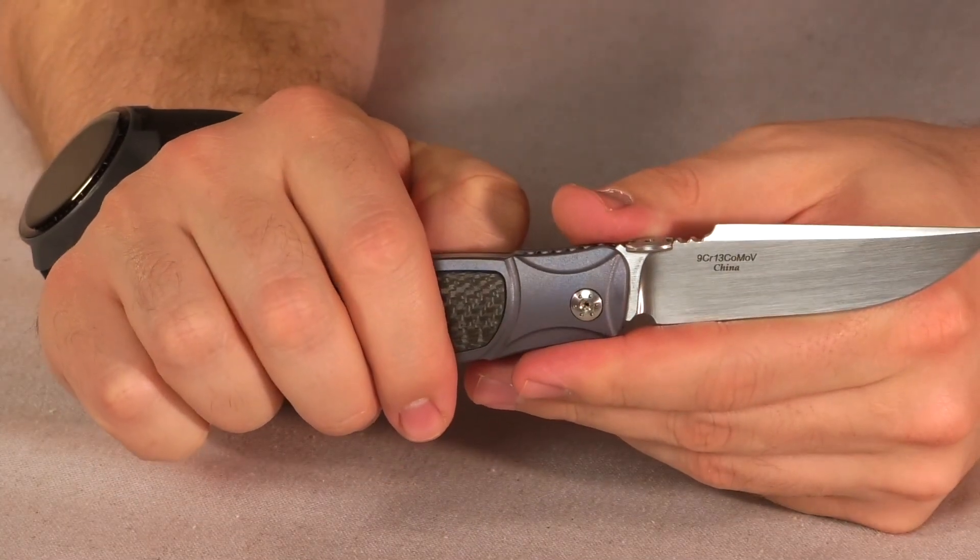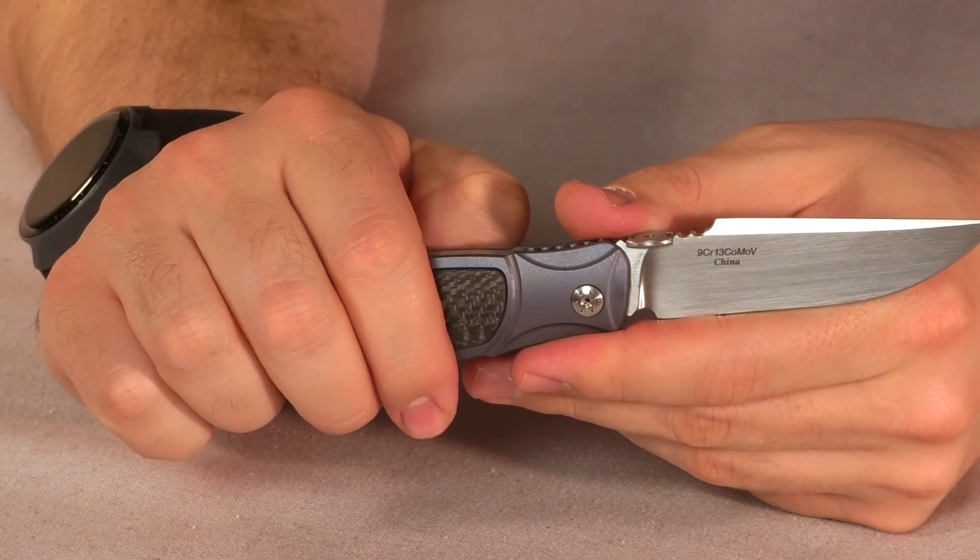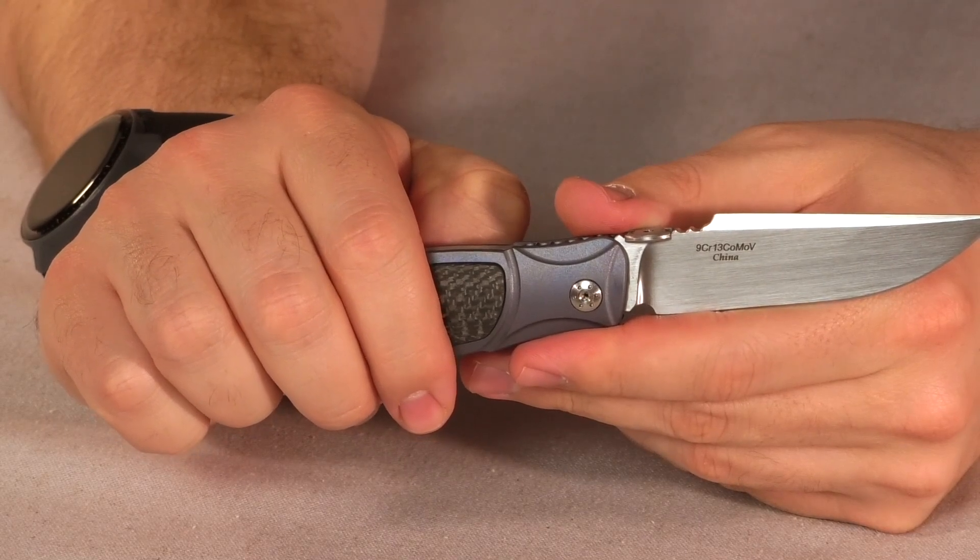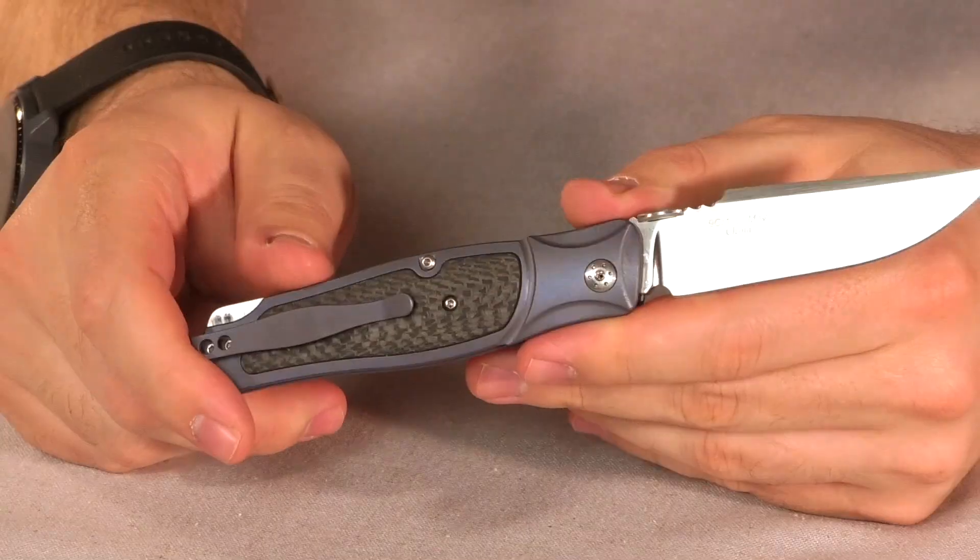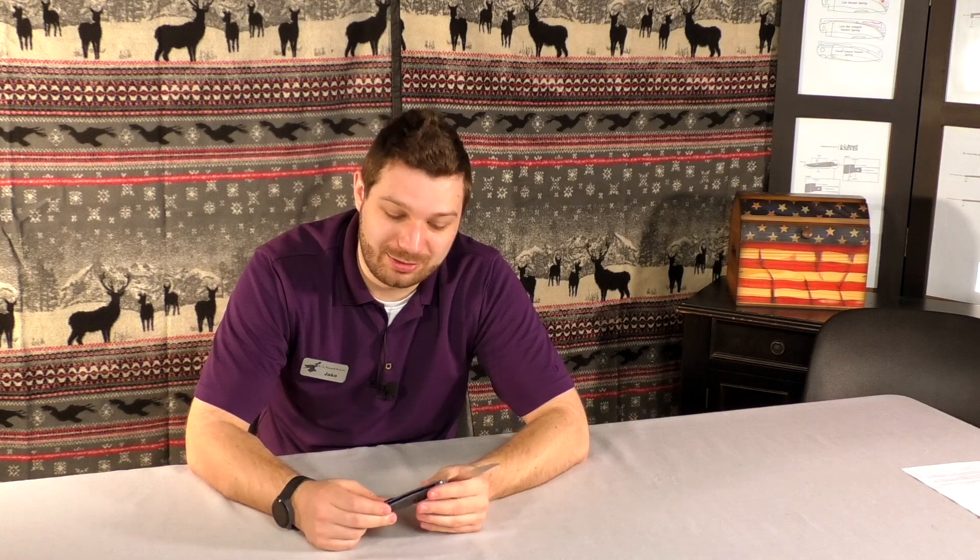The blade is a 9Cr13CoMoV so we got some cobalt in there. It's going to be a little step up from the usual AG Russell steel, a little bit better edge retention. It is made in China from one of our best manufacturers. They're doing an excellent job.